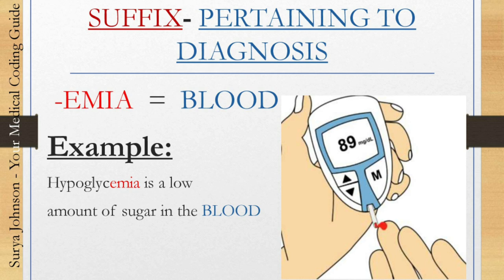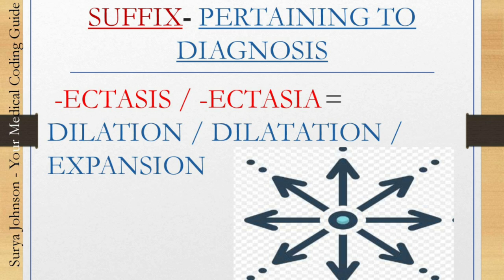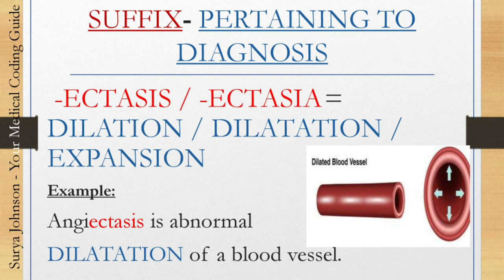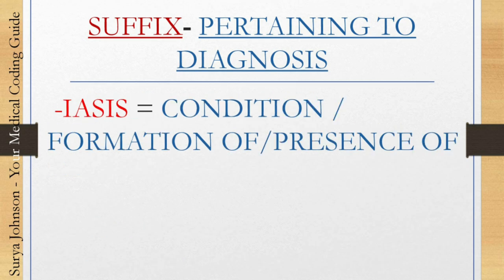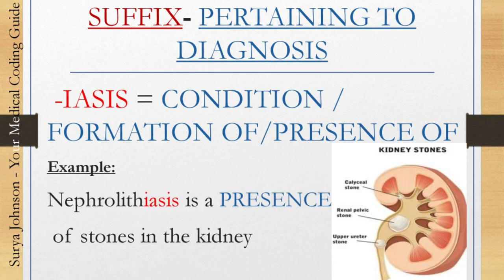For example, hypoglycemia is a low amount of sugar in the blood. The next one is '-ectasis' or '-ectasia,' which means dilatation, dilation, or expansion. For example, angiectasis is an abnormal dilatation of a blood vessel. The next suffix pertaining to diagnosis is '-iasis,' which means a condition, formation of, or presence of. For example, nephrolithiasis means the presence of stones in the kidneys.